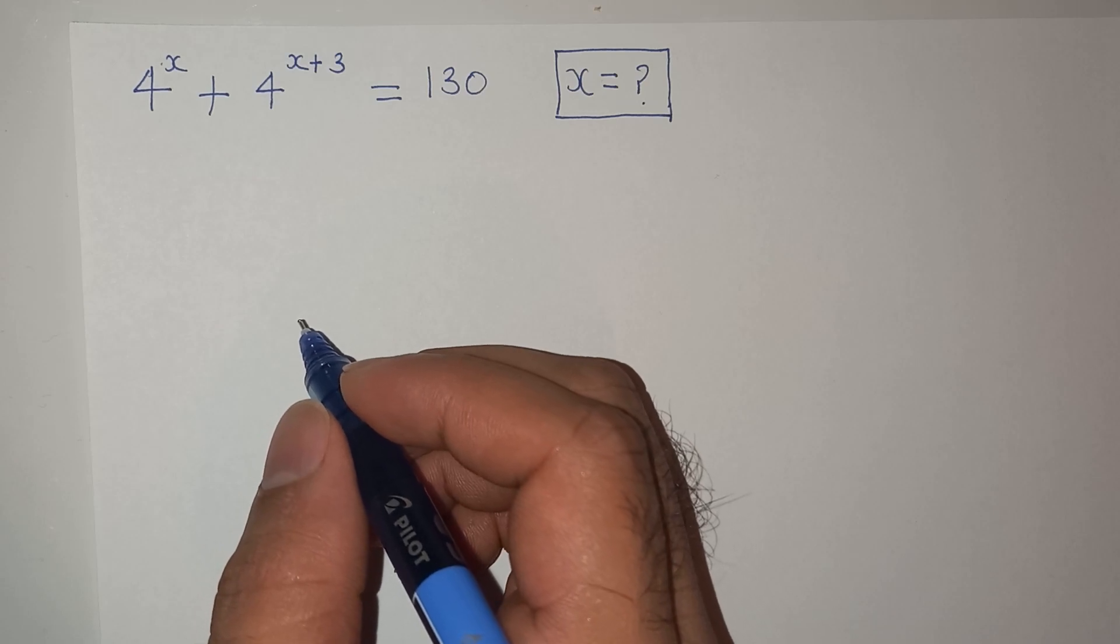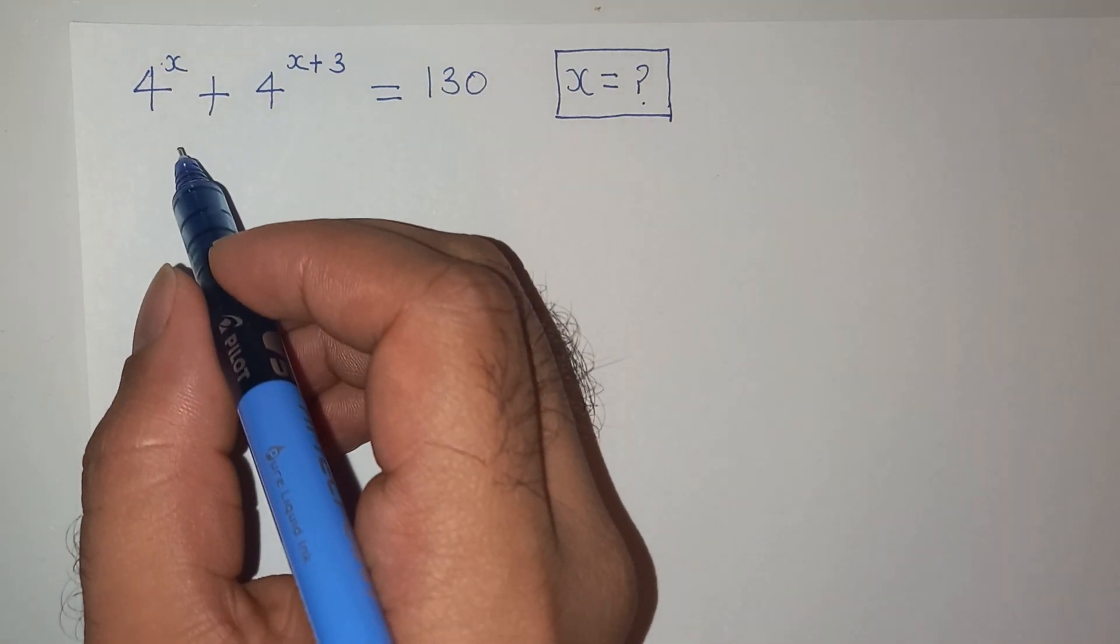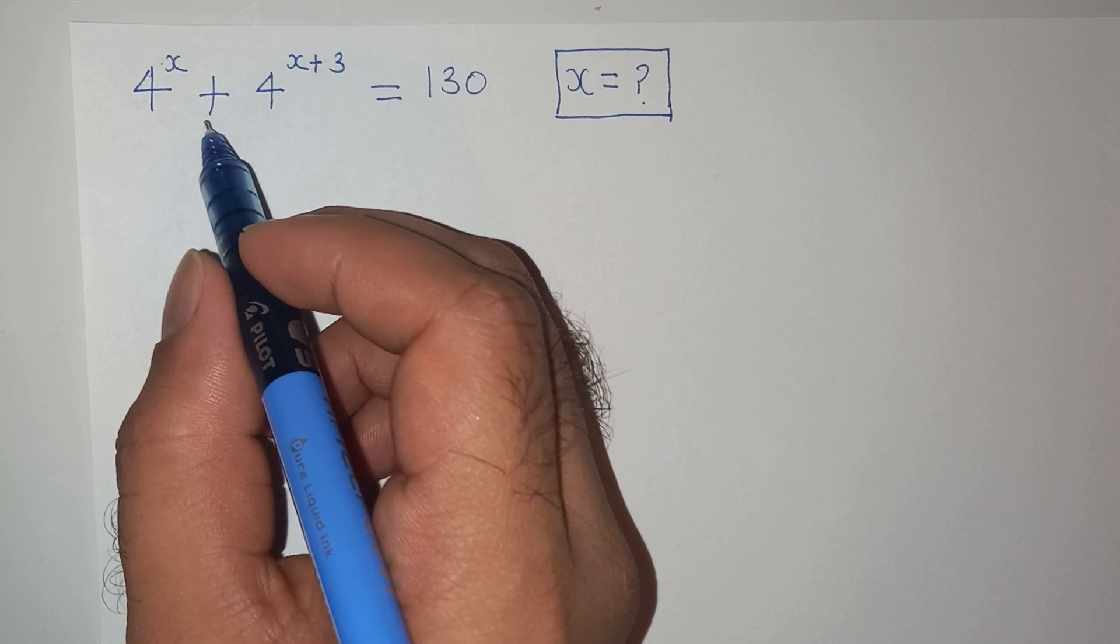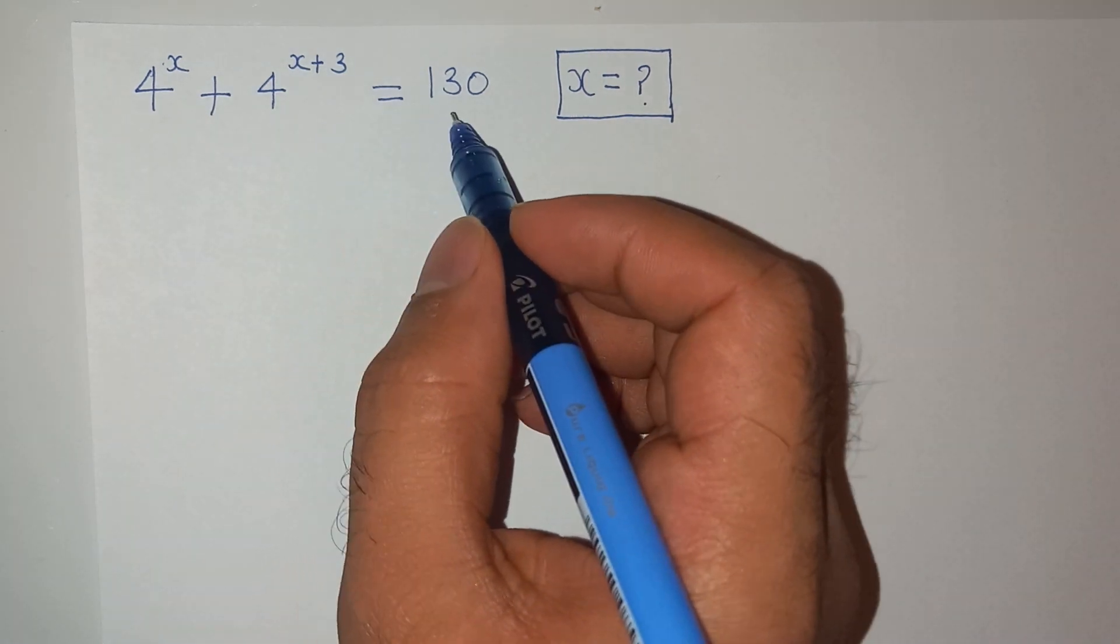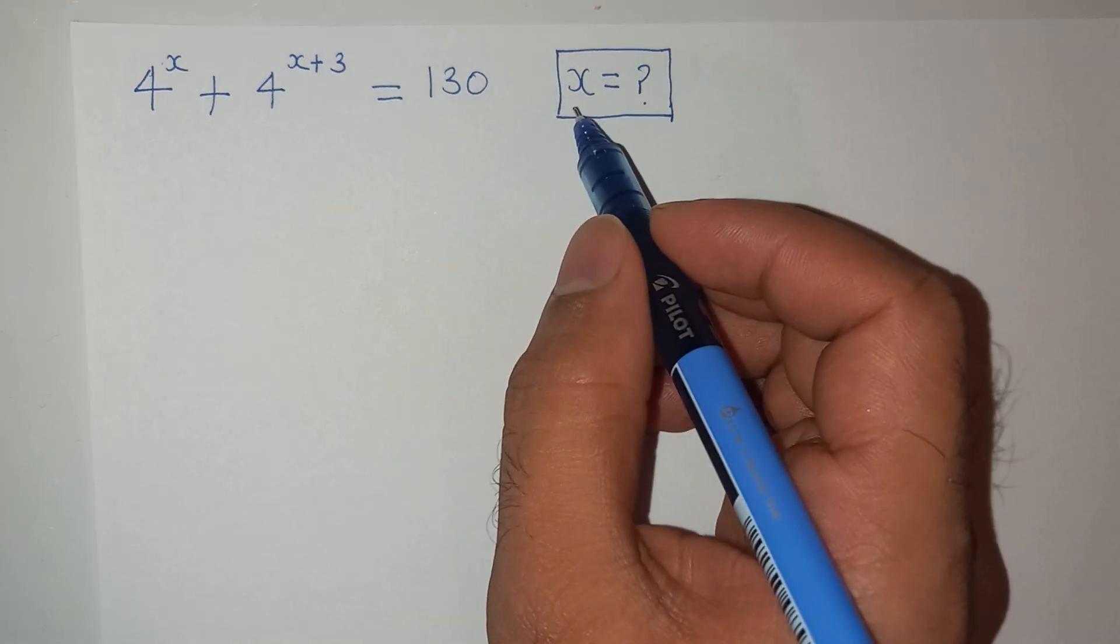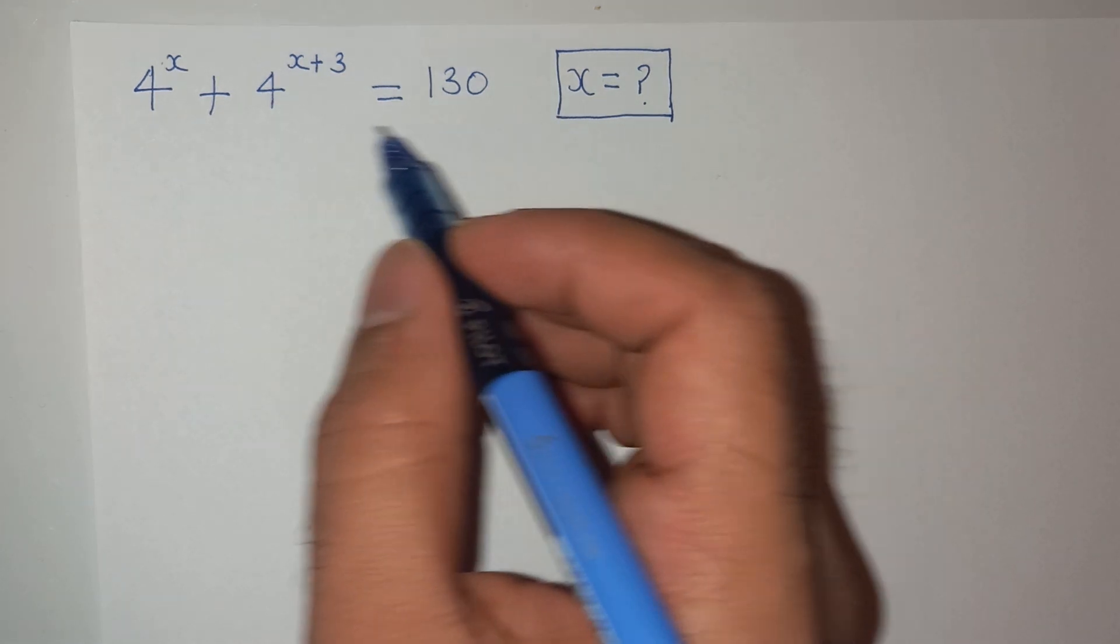Hi friends, welcome back to your channel. We are going to solve this question today which is 4 power x plus 4 power x plus 3 equals to 130 and we have to find the value of x. How to solve this question?